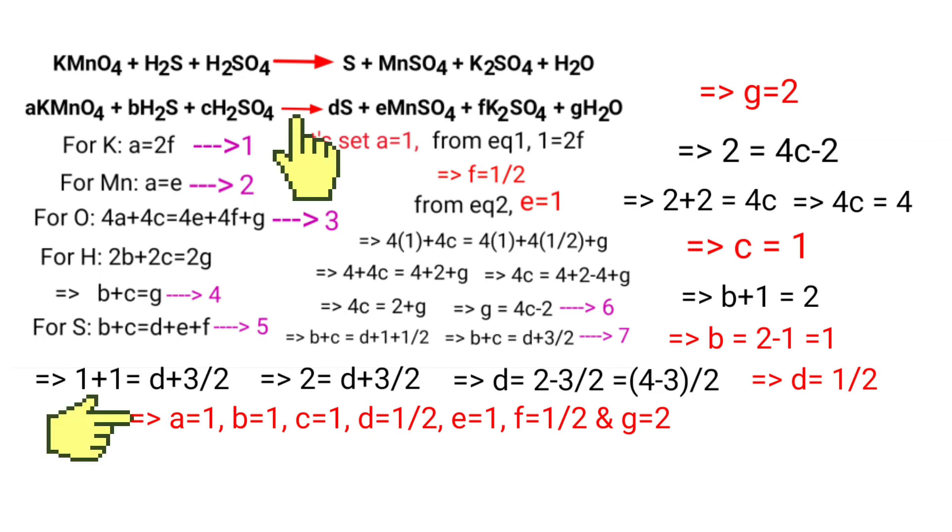Now apply the a, b, c, d, e, f, g values in the above equation. So KMnO4 plus H2S plus H2SO4 gives us 1/2 S plus MnSO4 plus 1/2 K2SO4 plus 2 H2O.